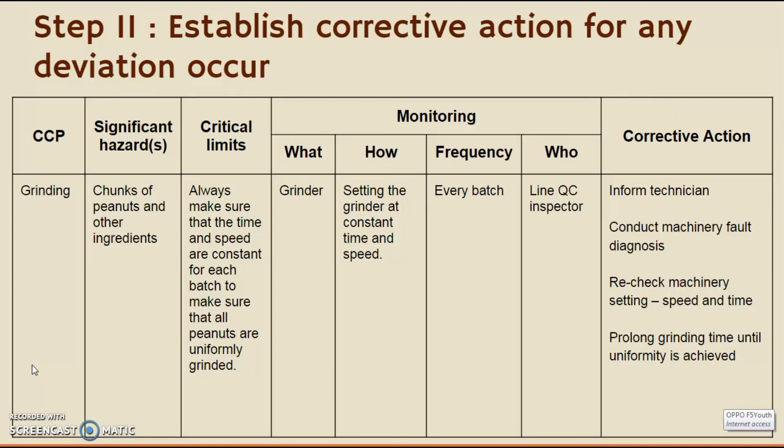Our next critical control point is grinding, as we want to achieve a smooth peanut butter spread. If the grinder is not working properly, we should inform the technician and conduct machinery fault diagnosis. We should also recheck the machinery settings, involving the speed and time of the grinder. If there is no problem with the machine, we should prolong the grinding time until uniformity is achieved.